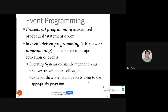Event programming is the third type of programming we are learning in this class. We learned procedural programming at the beginning — where statements in a procedure are executed in order from top to bottom. Then we talked about object-oriented programming, where we have a class as a pattern to define objects and instantiate them. The next paradigm is event-driven programming, where code is executed upon the activation of events, typically used in graphic user interfaces.